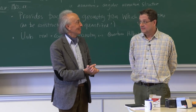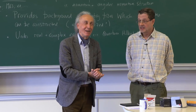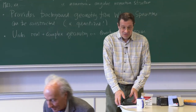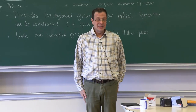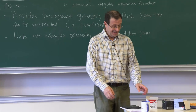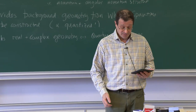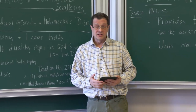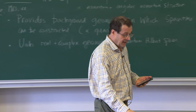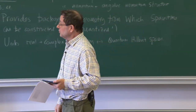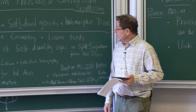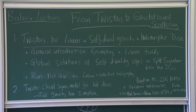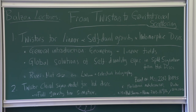We have the pleasure today to start the Balzan lectures. The first lecture will be Lionel Mason, and we will give another Balzan lecture next week at the same time. I would like to start by thanking the IHES for its wonderful hospitality and for Thibaut being such a warm colleague and inviting me to do these Balzan lectures. These lectures will be on recent work on twisters that have led to some rather beautiful and concrete formulae for gravitational scattering. The structure of these lectures is based on a paper I put out at the end of last year, and it naturally falls into two parts.